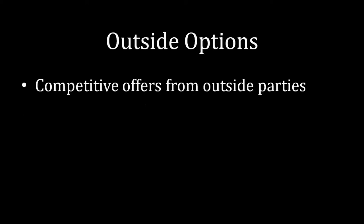Outside options are another important part of bargaining. If you and I are negotiating, but if negotiations fail between us I can go to a third party and receive some sort of deal from them, that competitive offer from the third party is going to force you to be nicer to me — because you don't want me to leave our bargain. Having that outside option forces you to give me concessions, which is good for me.